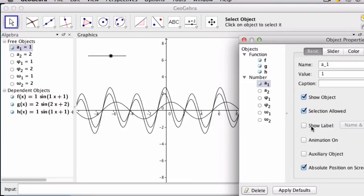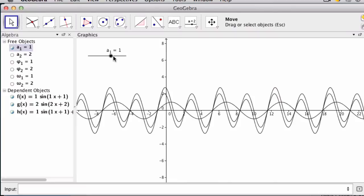that the labels are on them. So go here, click show label, name and value. We don't want to lose track of that amplitude. And then we want to show the slider for amplitude two, put it over here.